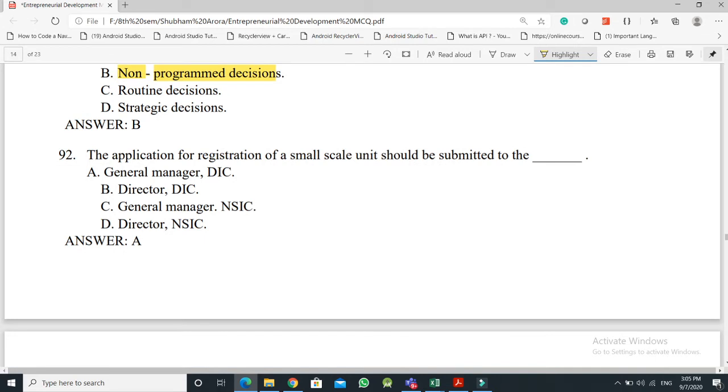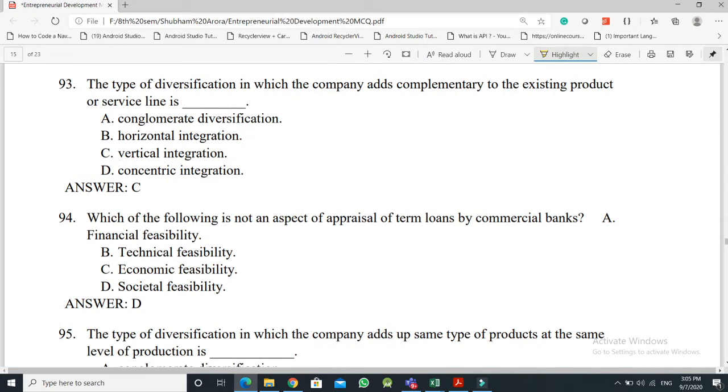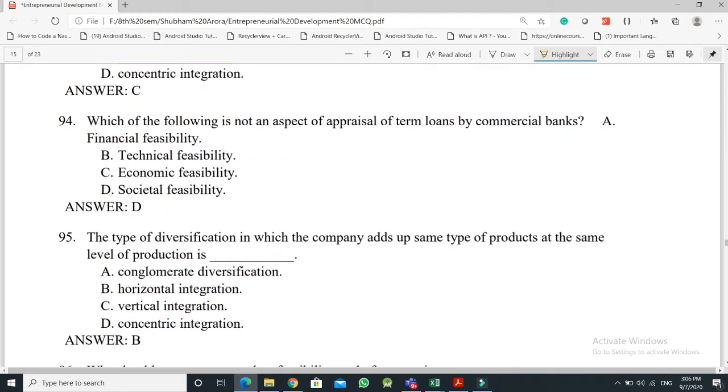Question No. 92: The application for registration of a small scale unit should be submitted to - the answer is Option A, General Manager DIC. Question No. 93: The type of diversification in which the company adds complementary to the existing product or service line is called - the answer is Option C, vertical integration.